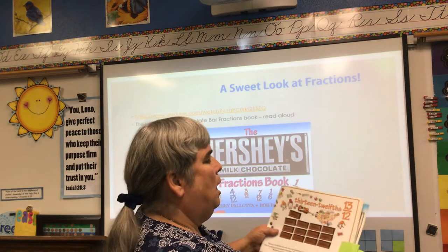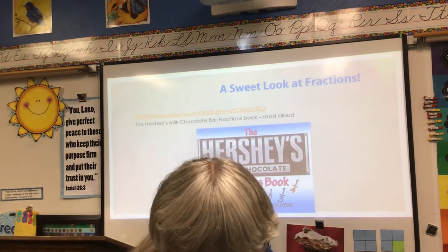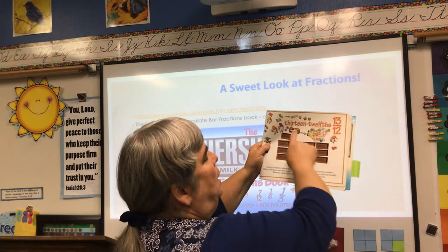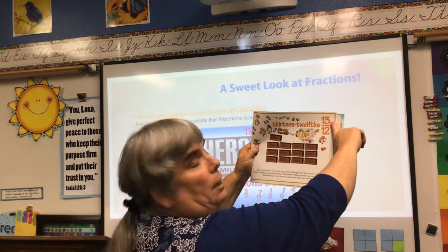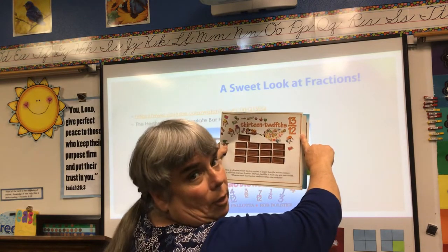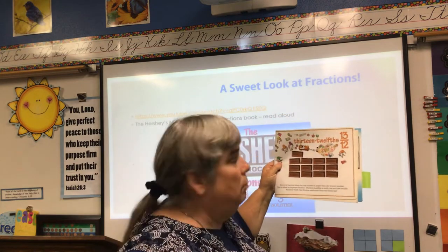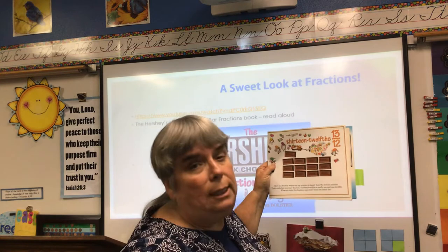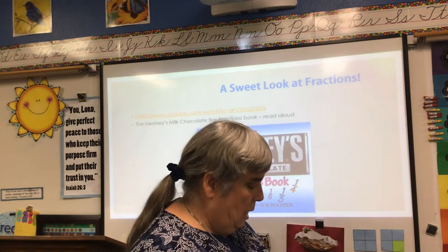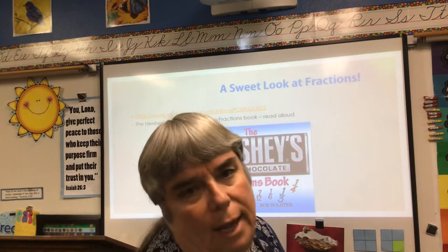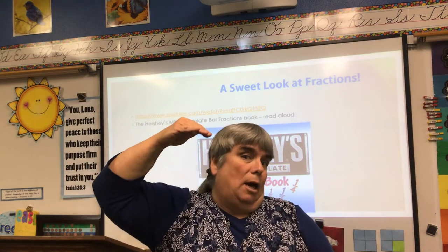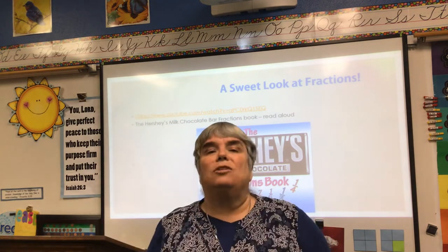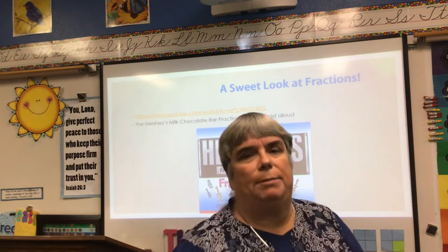I'm going to skip to the very end because this has to do with something we're going to talk about in our lesson today. What you notice is instead of 12 twelfths, they have the whole candy bar, but then they have an extra 1 twelfth. So what they actually have is 13 twelfths — the number on top is bigger than the number on the bottom. This is called an improper fraction. Whenever you have a fraction where the numerator — the number on the top, remember 'north' — is larger than the denominator, that's called an improper fraction.